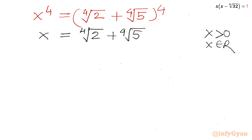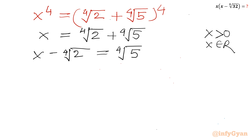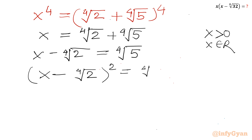Now I will subtract ⁴√2 from both sides. So it will become: x − ⁴√2 = ⁴√5. Now squaring both sides: (x − ⁴√2)² = (⁴√5)². The right-hand side (⁴√5)² equals √5.